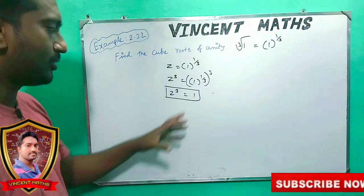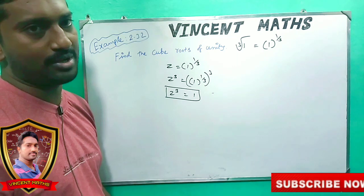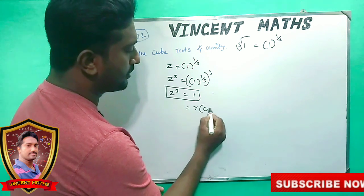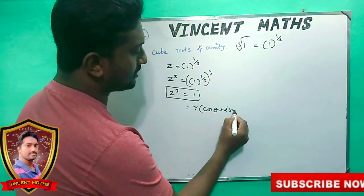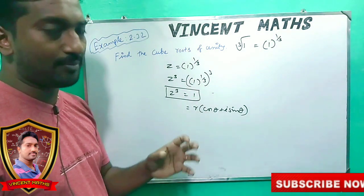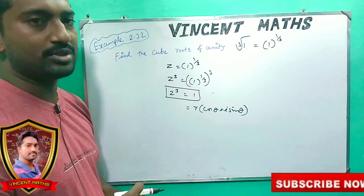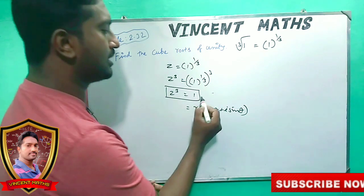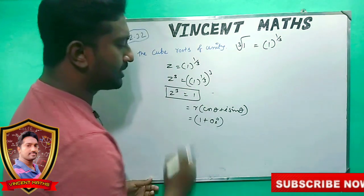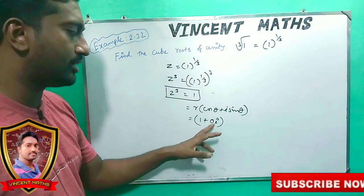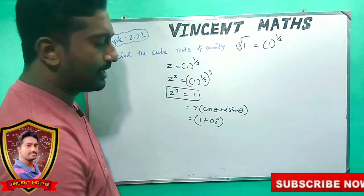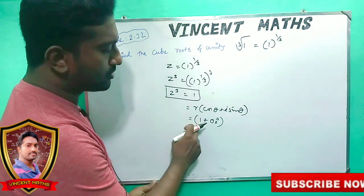Now what do we do? We will find the polar form. Polar form: r into cos theta plus i sin theta. We identify the complex number as 1 plus 0i. Then r equals the square root of 1 squared plus 0 squared, which equals 1.